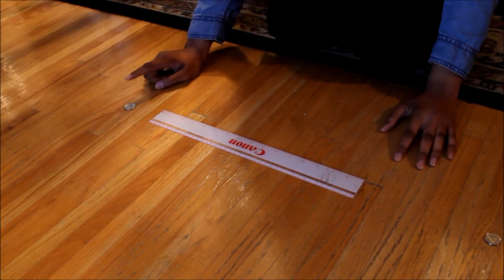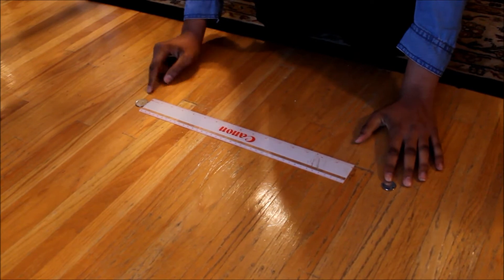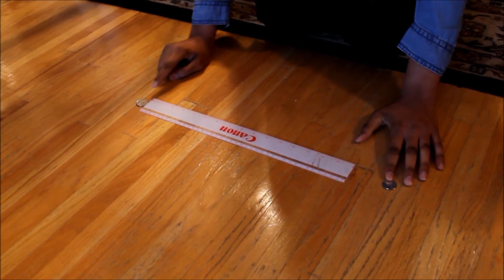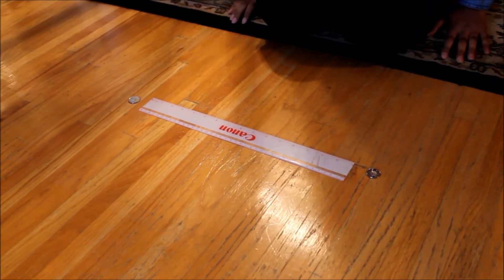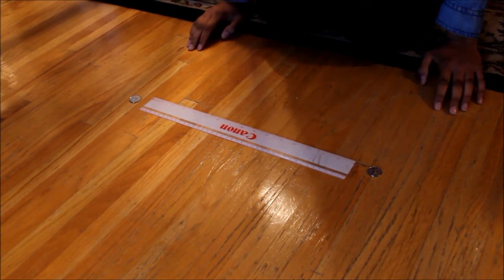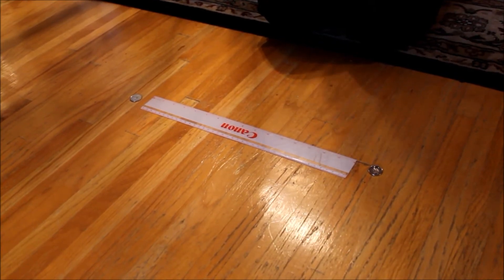This is how the momentum is transferred from the quarter to the nickel. Now, let's reverse it. Let's place the quarter really close to the ruler and slide the nickel from a distance. Notice how the quarter didn't move very far from the ruler, but the nickel did. That's because the mass of the quarter is greater than the mass of the nickel.